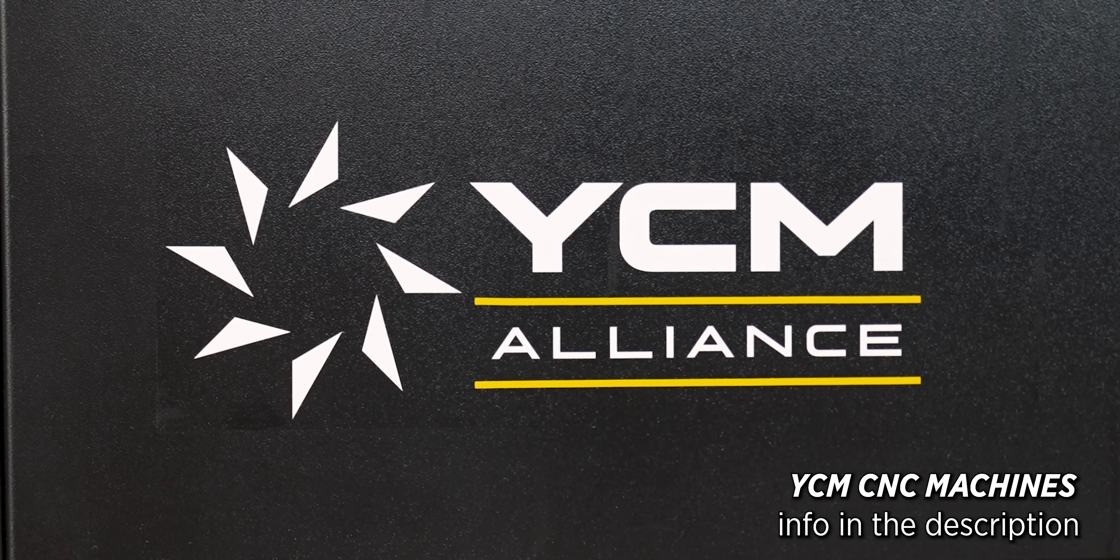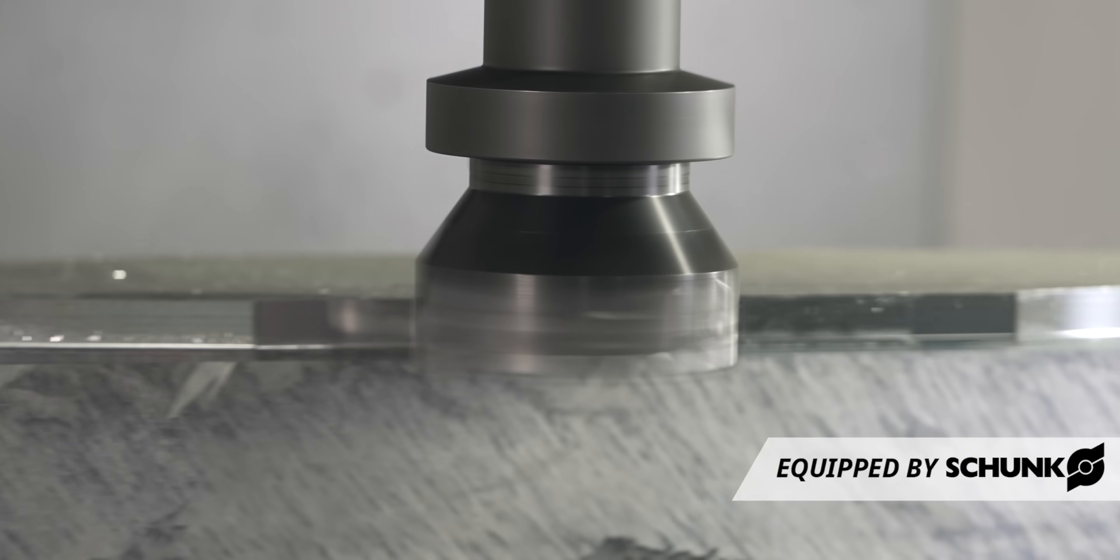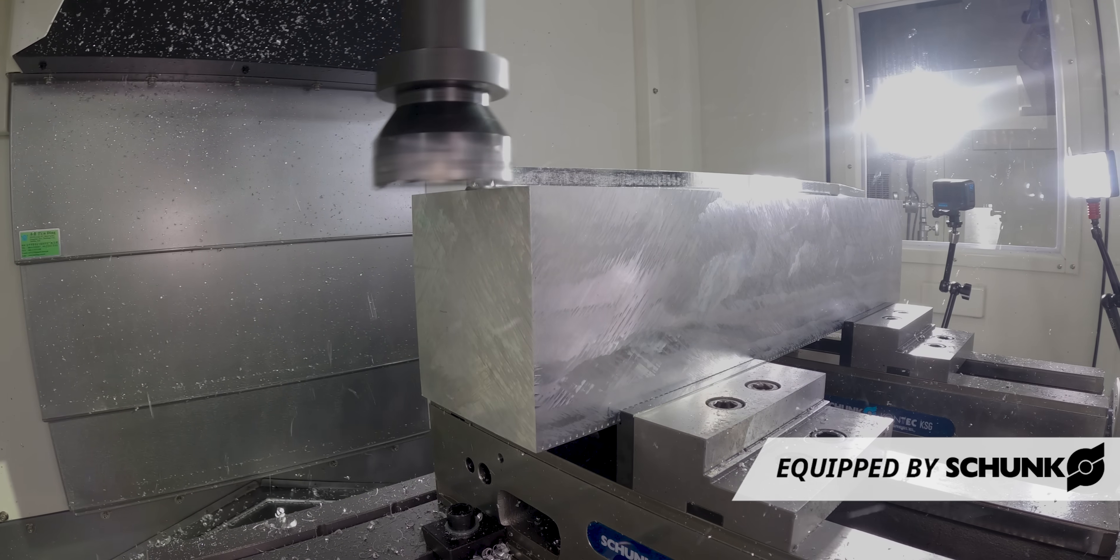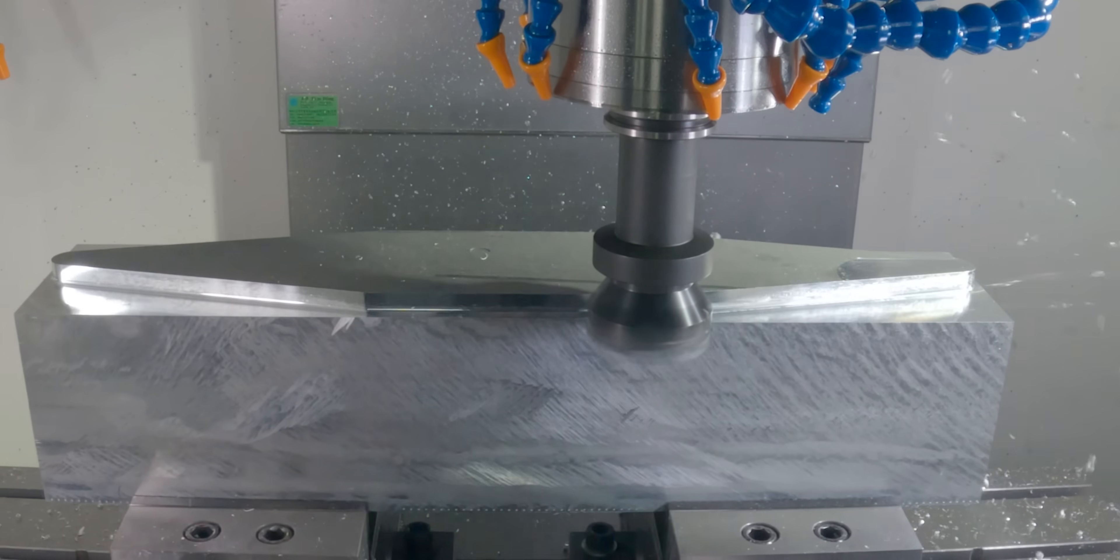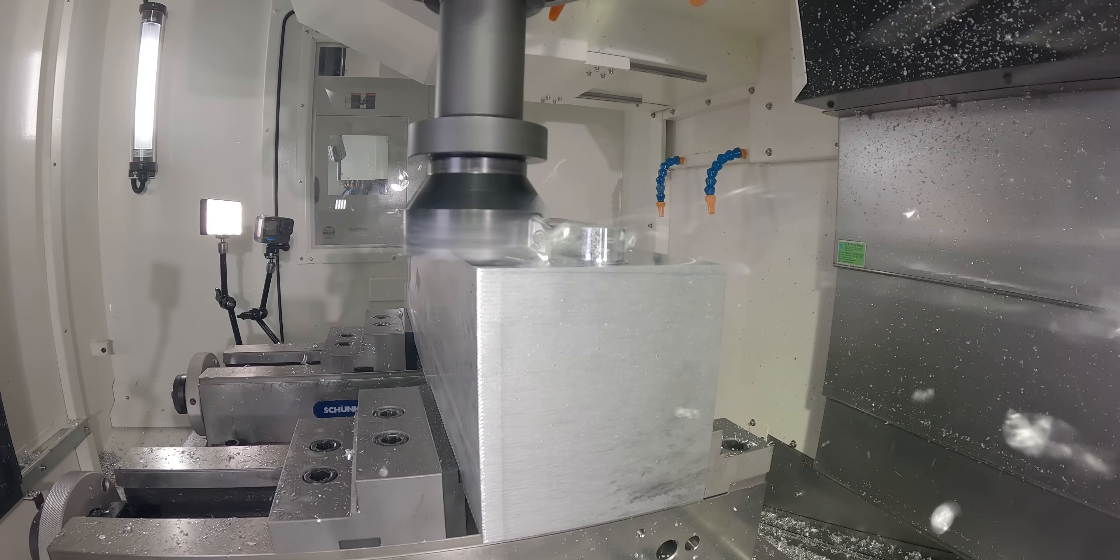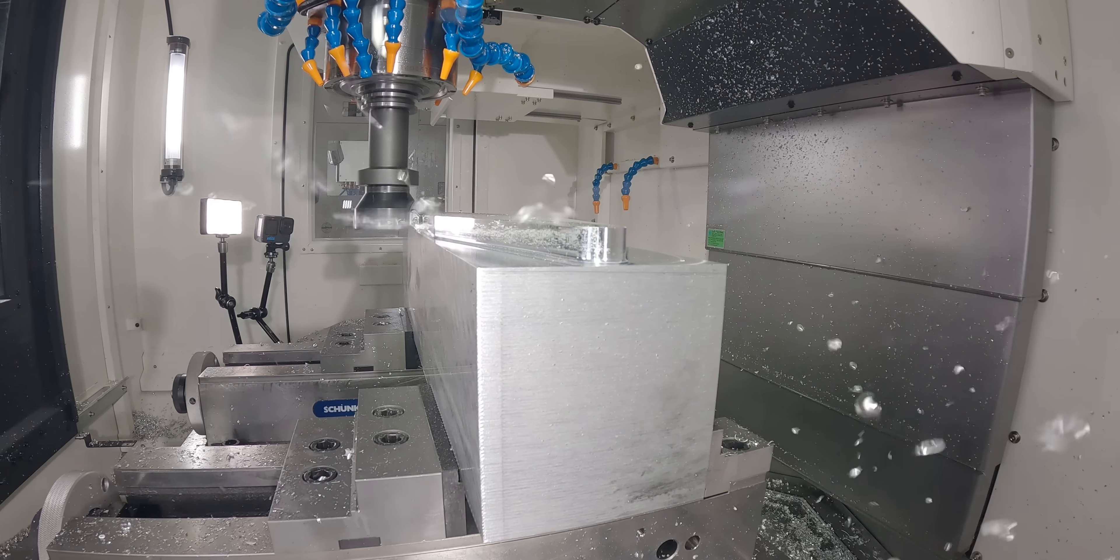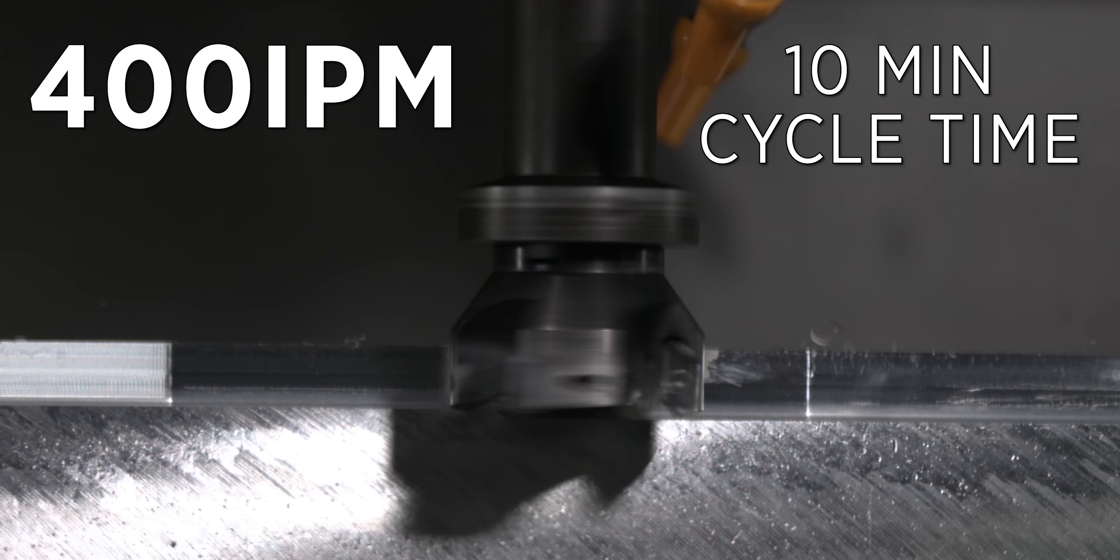Starting to get a little nervous. Here's 400 inches a minute. This is at 100 thousandths depth of cut too. At 400 inches a minute, the roughing cycle would take about 10 minutes.